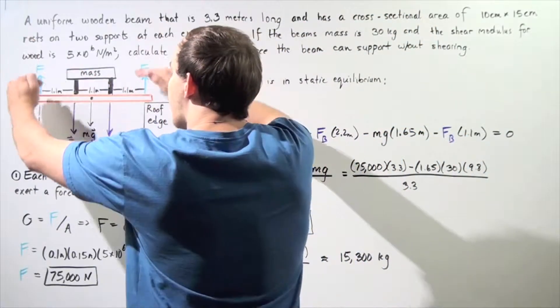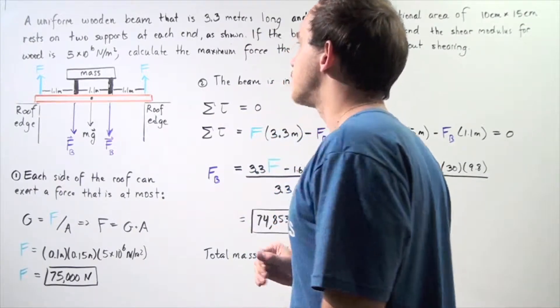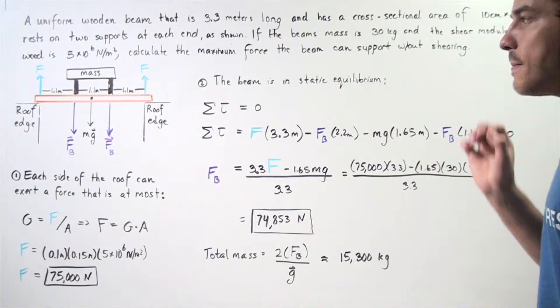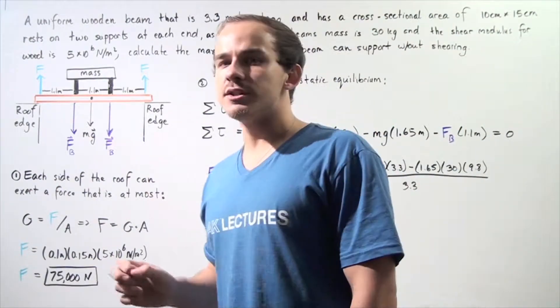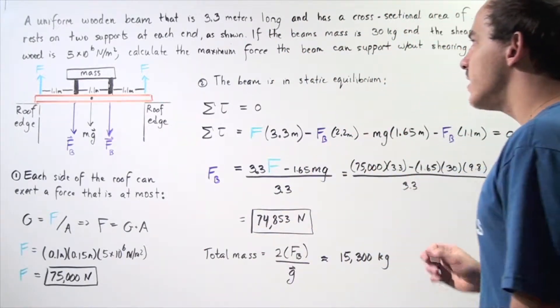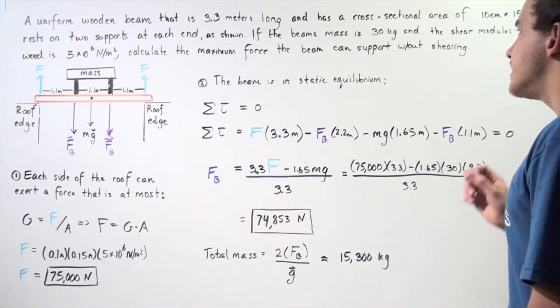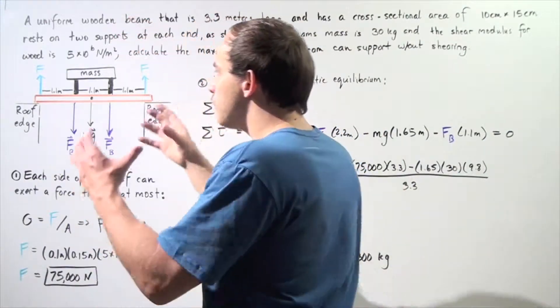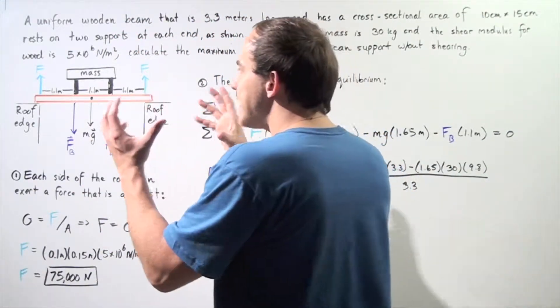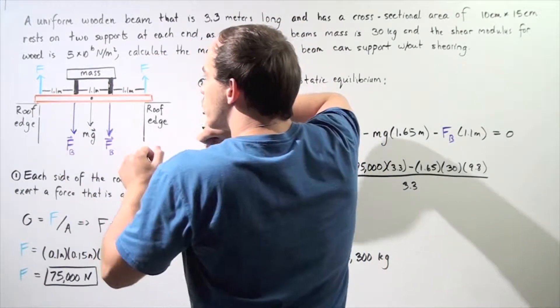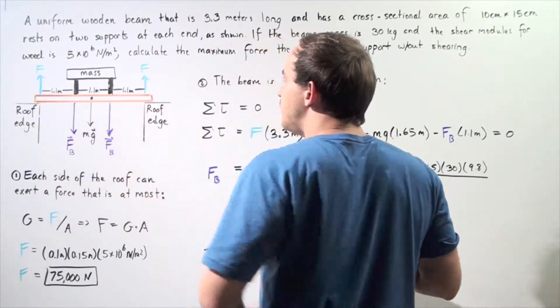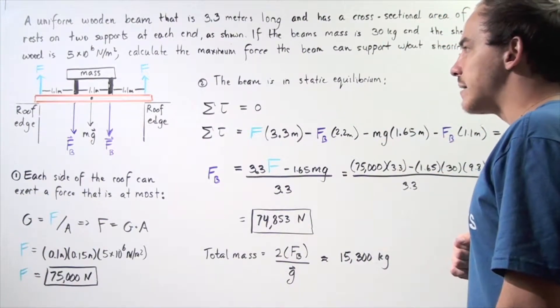We place the beam on top of these two roof edges. Now, if the beam has a uniform mass of 30 kilograms and the shear modulus for the wood that the beam is composed of is 5 times 10^6 newtons per meter squared, let's calculate the maximum force the beam can support without shearing. So let's look at our diagram. Let's suppose we have a uniform mass, and we place it, we balance it on two beams as shown. And this entire system is resting on the following beam that has a length of 3.3 meters and a mass of 30 kilograms.